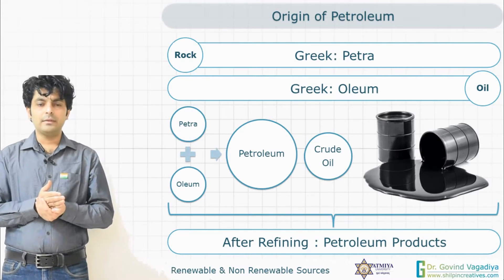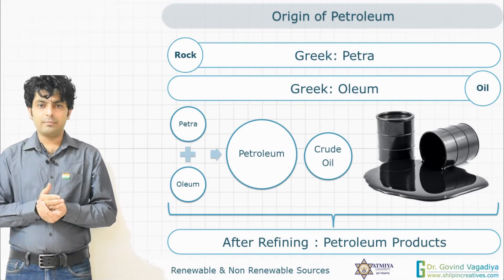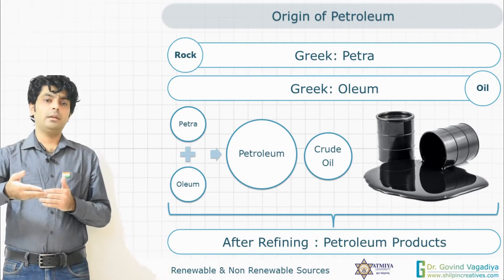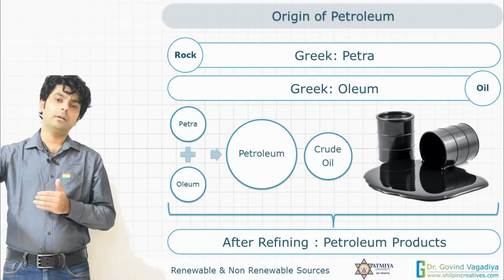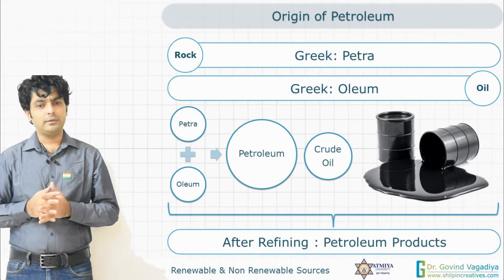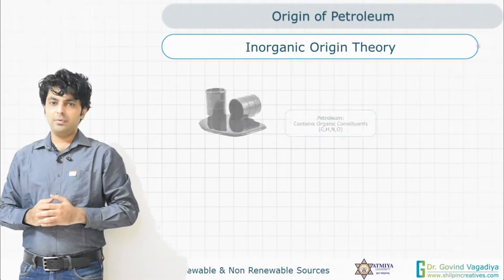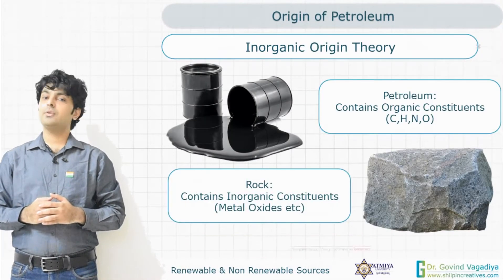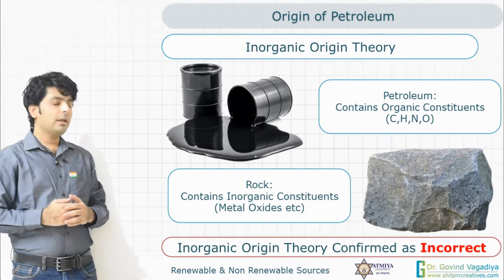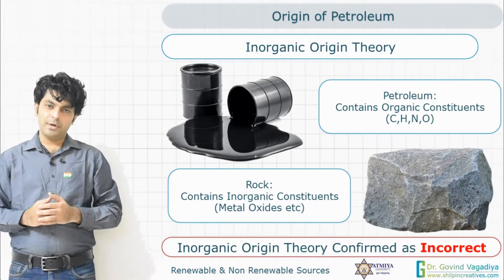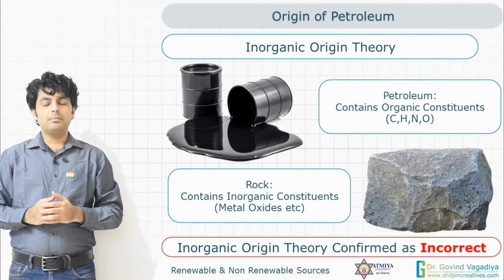Ancient people believed it was derived from rock, which is why it is called petroleum. When petroleum is refined in a refinery, it creates new products called petroleum products. There are two different theories of the origin of petroleum: the organic origin theory and the inorganic origin theory.